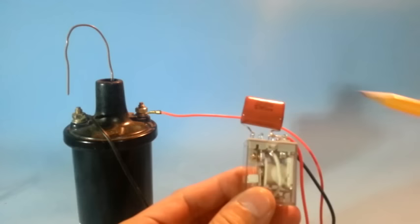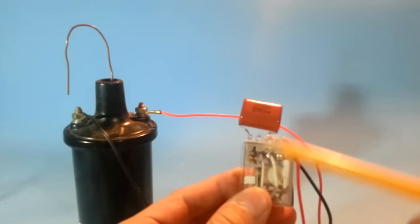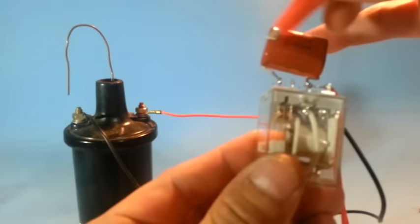The capacitor is needed to reduce the spark that jumps when the normally close contact opens. Without the capacitor, this spark will be much stronger. Let me show you the spark.